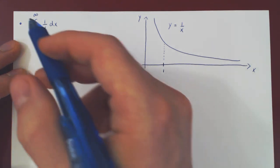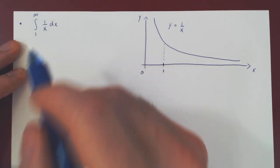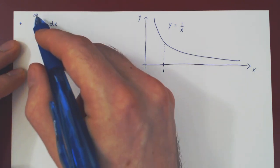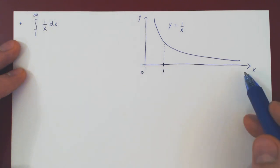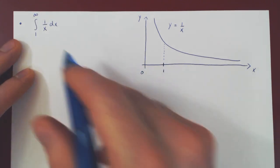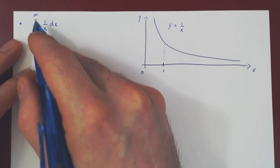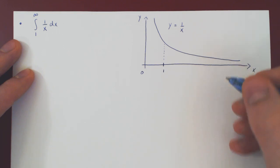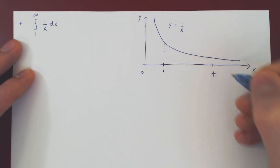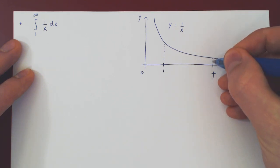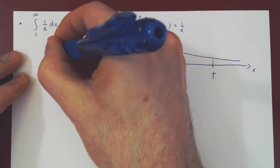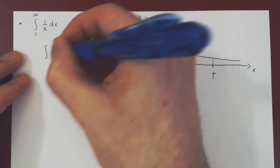There is a problem. We cannot evaluate this directly with the fundamental theorem of calculus, as we are violating the condition that we need a finite interval. But this can be easily fixed. What if we essentially stop before infinity? What if we go from 1 to t, where t is a fixed positive real number? We could integrate 1 over x dx from 1 to t.